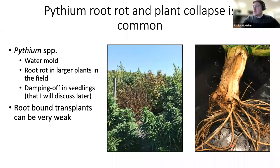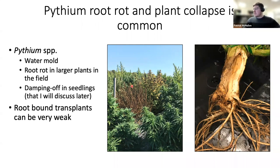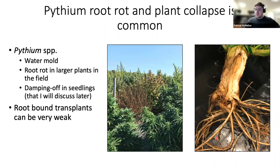A similar pathogen causing root rot and plant collapse is Pythium root rot. It's important to note that Pythium isn't a true fungus — it's an oomycete or water mold. Root rot in larger plants can be observed in the field. In smaller seedling production, damping off caused by the same species of Pythium can occur. Root-bound transplants can be very weak and more susceptible to Pythium and other root rots.